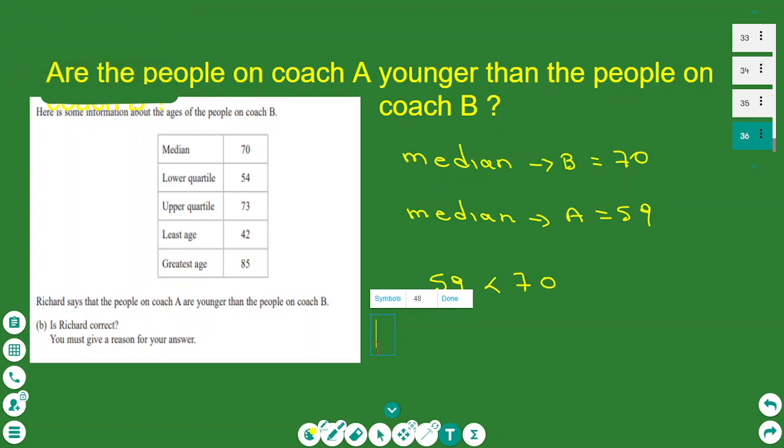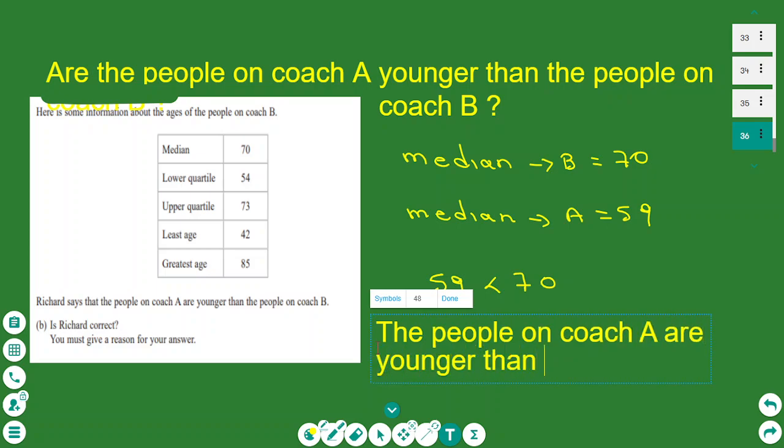Which means that the people in coach A are younger than the people in coach B. So in this case, we compare the two medians. And this is the purpose of statistics, like comparing data. So we conclude here that the people on coach A are younger than the people on coach B. Because the median age is lower.